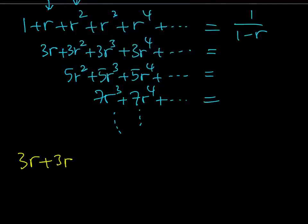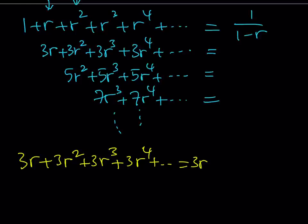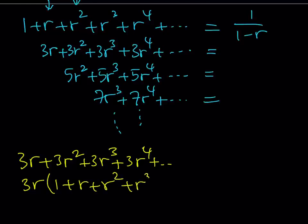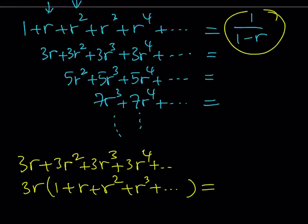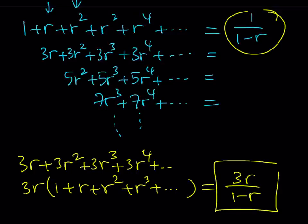Let me work them out so we can put it all together. Let's start with the second series. If you look at the second one carefully, you'll notice I can pull out 3r, and the rest is just 1 plus r plus r squared plus r cubed and so on. Since I already know this sum inside the parentheses is 1 over 1 minus r, I can plug it in and get 3r over 1 minus r. That's the sum of my second series.